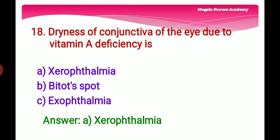Eighteenth question: Dryness of the conjunctiva of the eye due to vitamin A deficiency — Option A: Xerophthalmia, a medical condition in which the eye fails to produce tears. Option B: Bitot's spots, triangular patches of the xerosed conjunctiva. Option C: Exophthalmia, abnormal protrusion of the eyeball. The right answer is Option A, xerophthalmia.